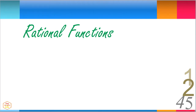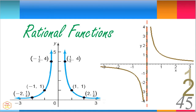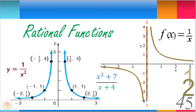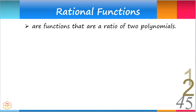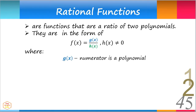Rational functions are functions that are a ratio of two polynomials. They are in the form f equals g divided by h, where h is not equal to zero. The function g, the numerator, is a polynomial, and the function h, the denominator, is a polynomial.